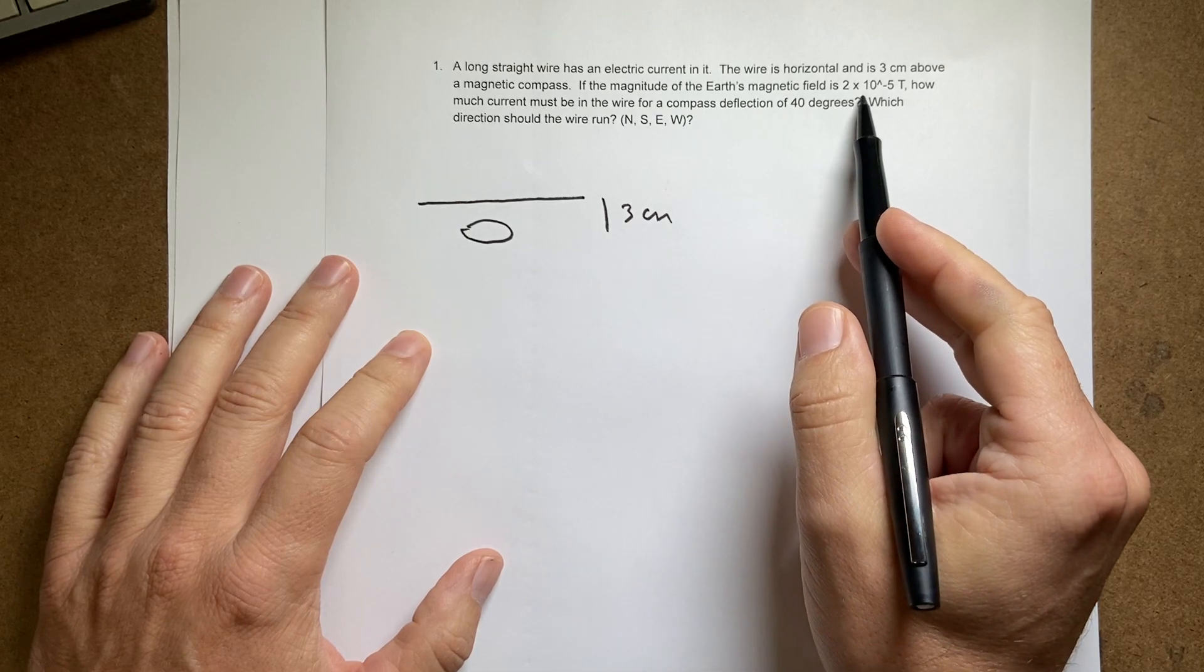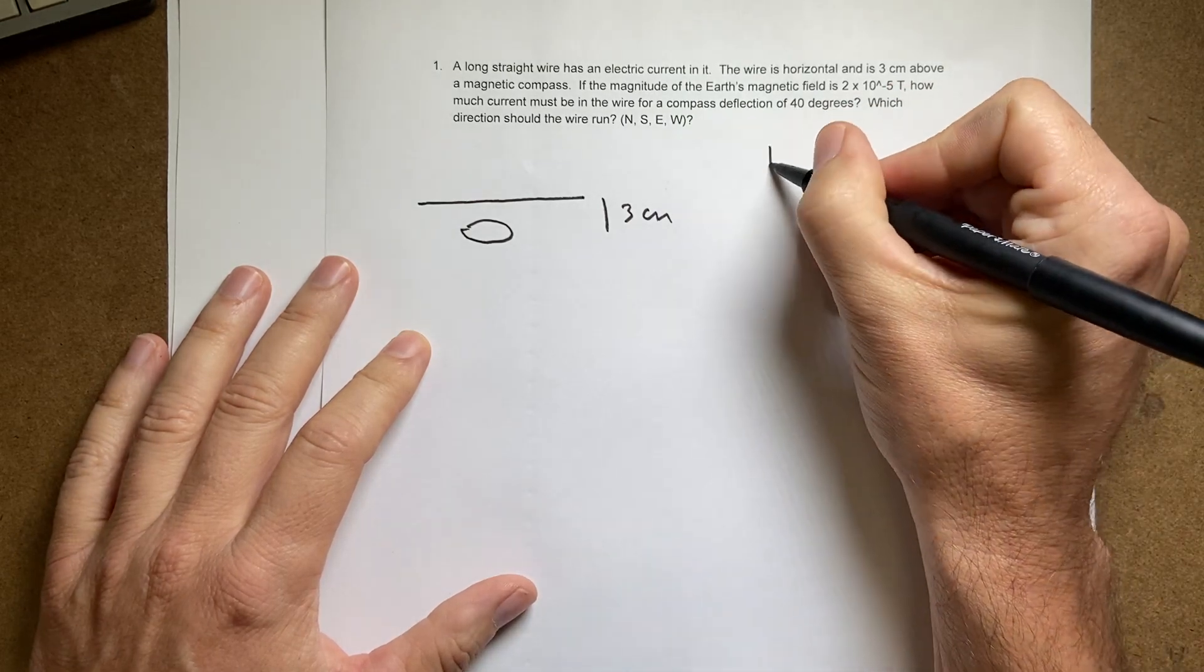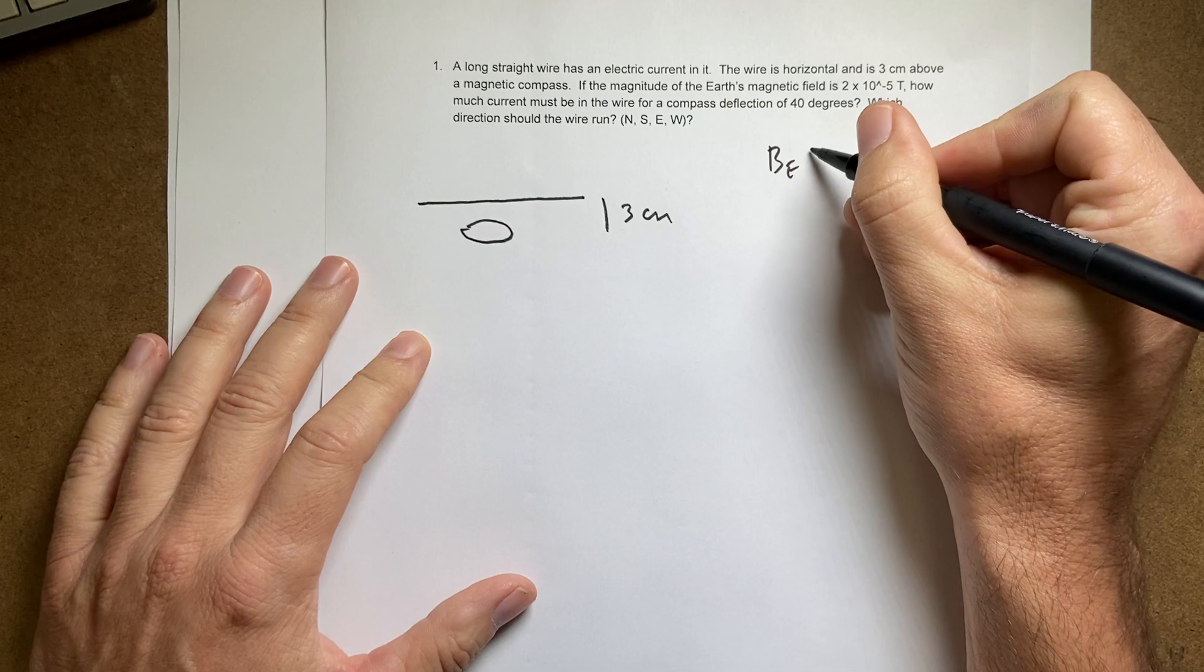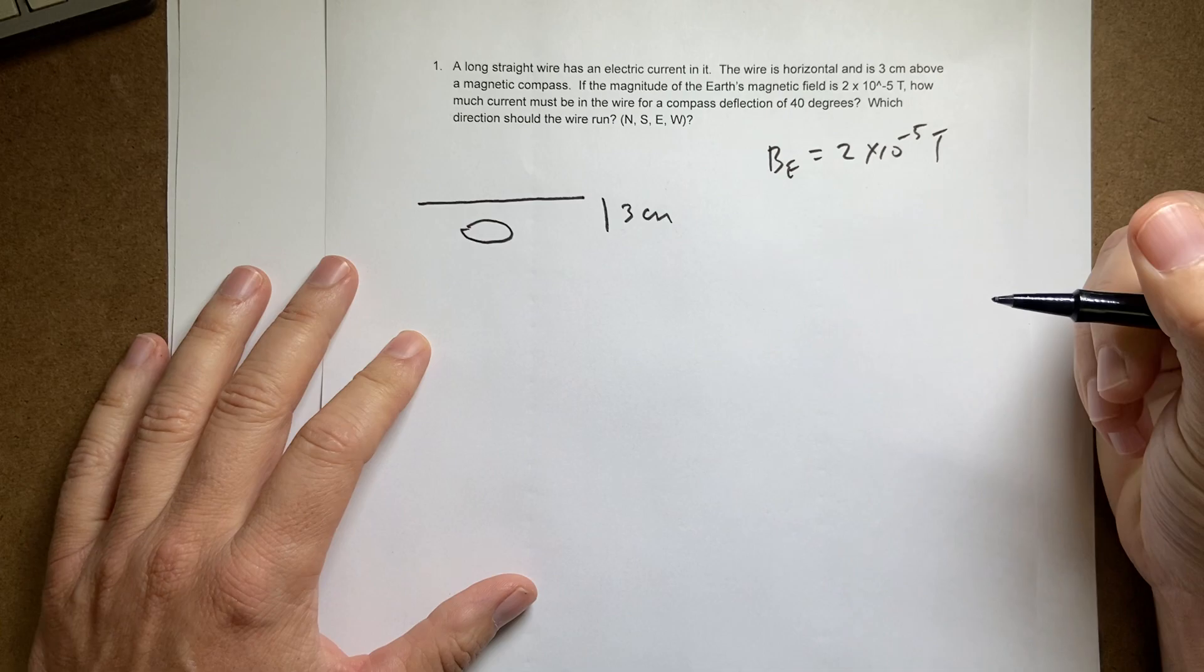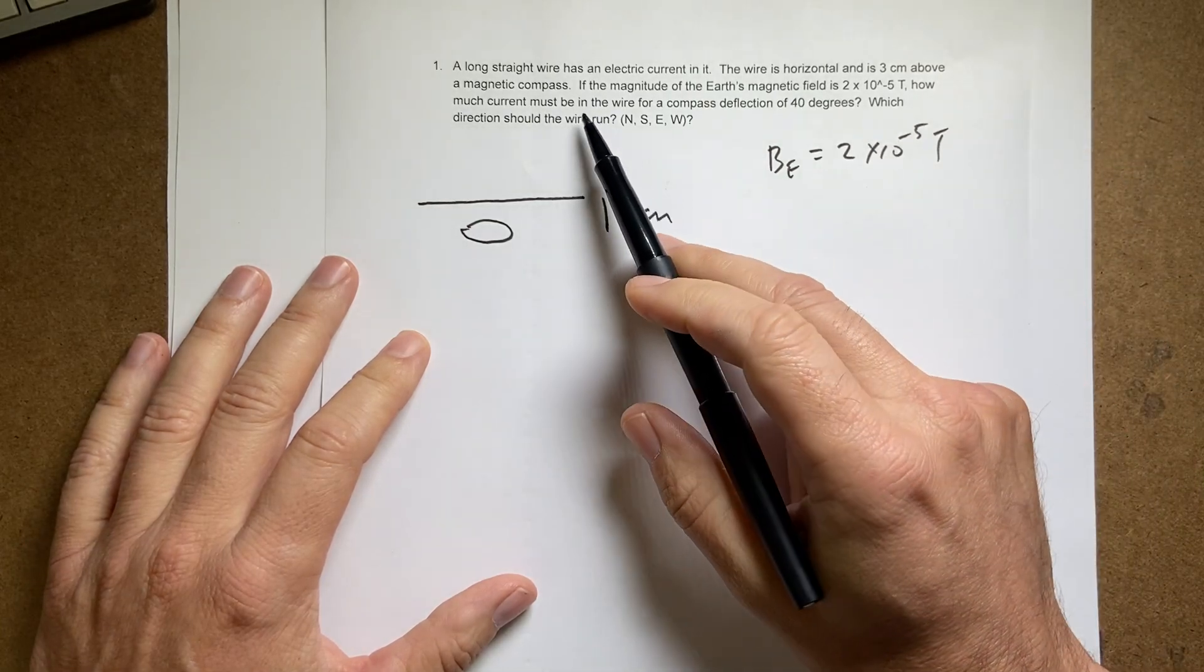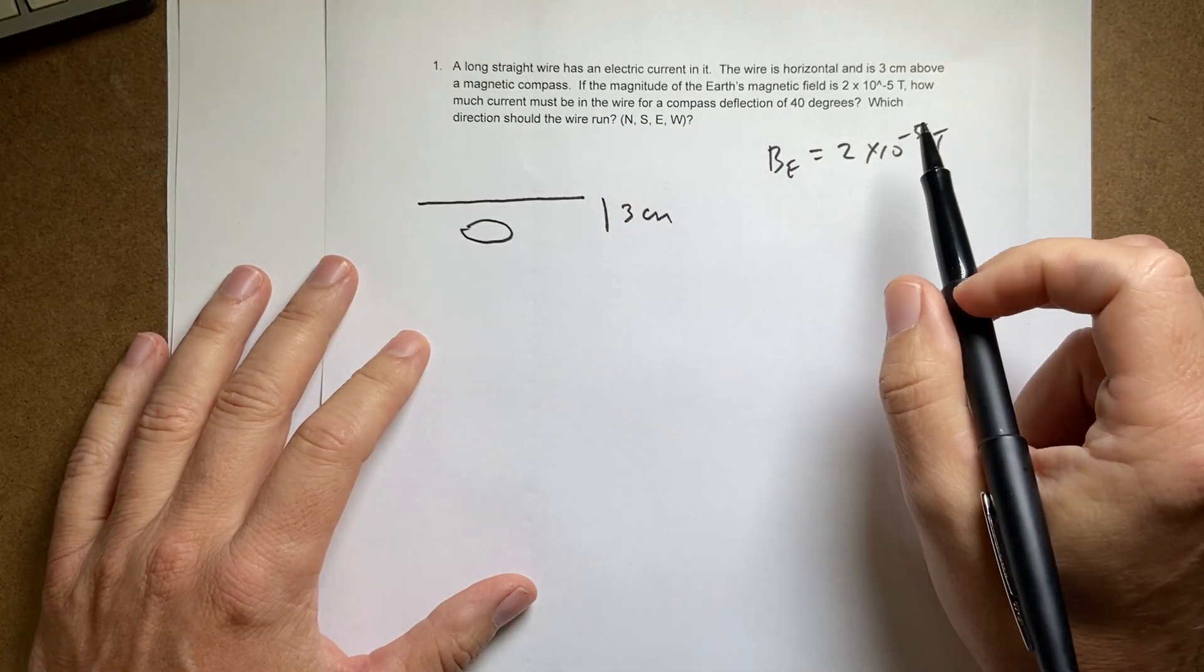The magnitude of the Earth's magnetic field is two times ten to the negative fifth. So B Earth, and this is actually the horizontal component, is two times ten to the negative fifth Tesla. So how much current must be in the wire for the compass deflection of 40 degrees?